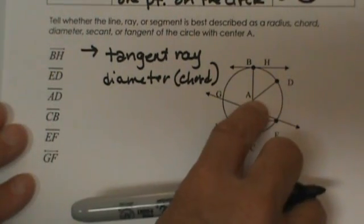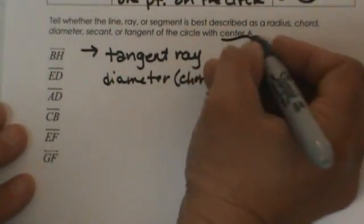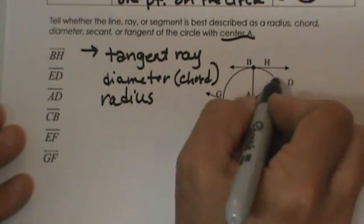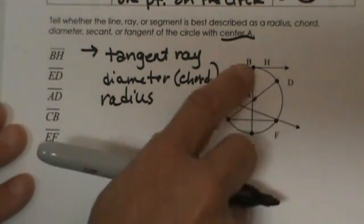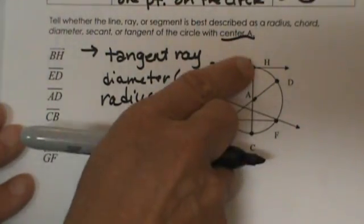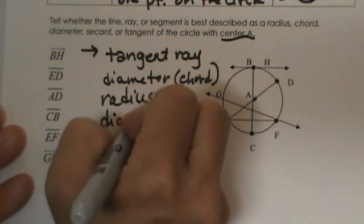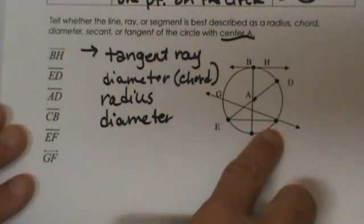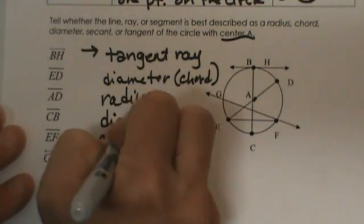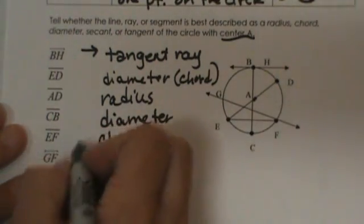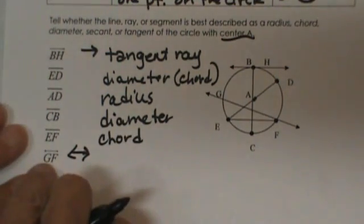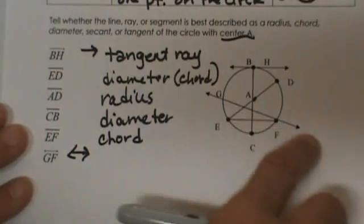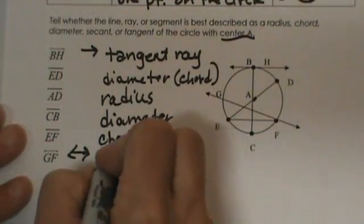How about AD? A is the center of the circle — we call this circle A — so AD is a radius because it goes from the center to the side. CB: both endpoints C and B are on the circle, and it goes through the center, so it is also a diameter just like ED. How about EF? EF has endpoints on the circle but does not go through the center, so it is just a chord. And EG has arrows on both ends, meaning the line continues in both directions — it goes through the circle and contains points on the outside, therefore it is a secant.